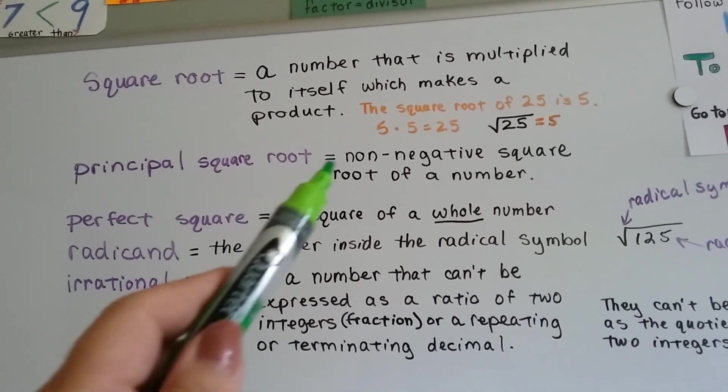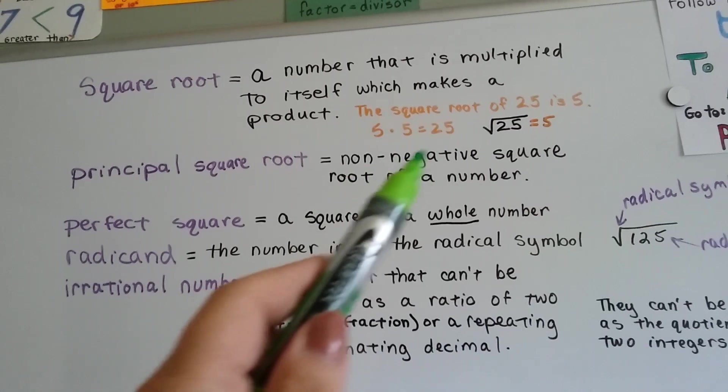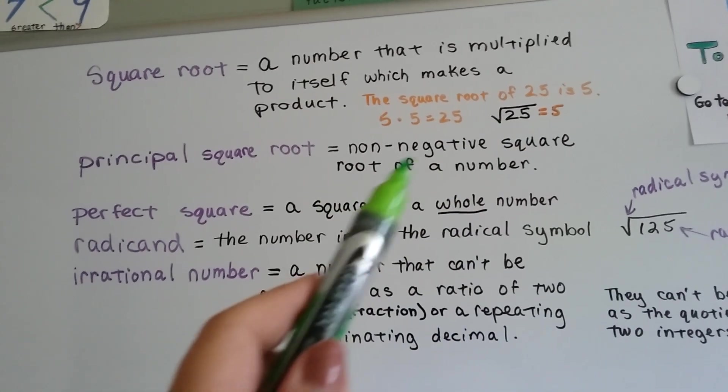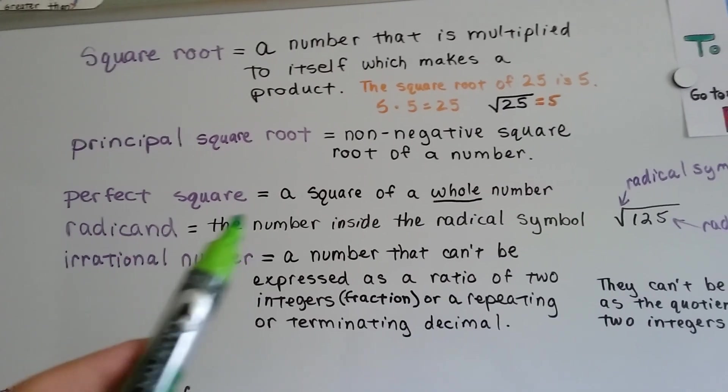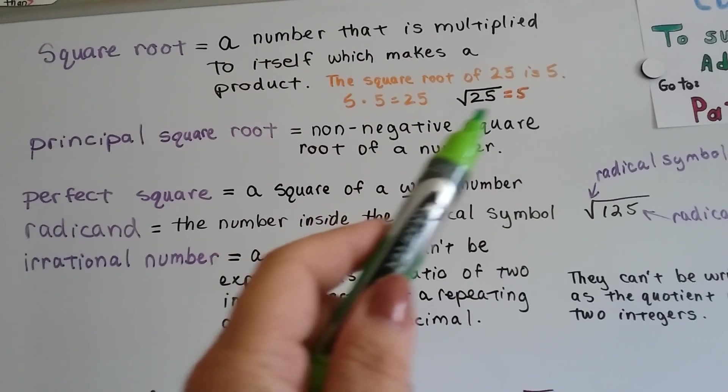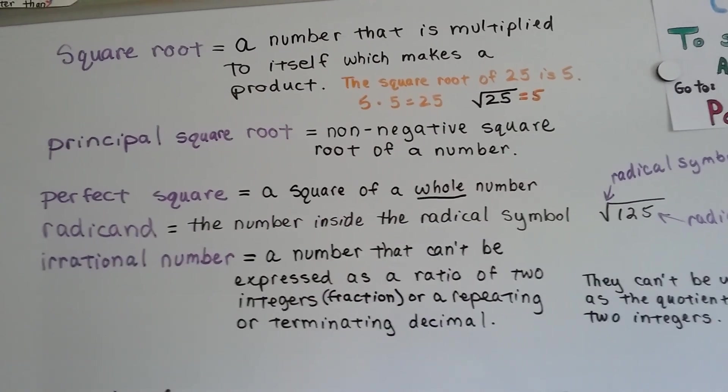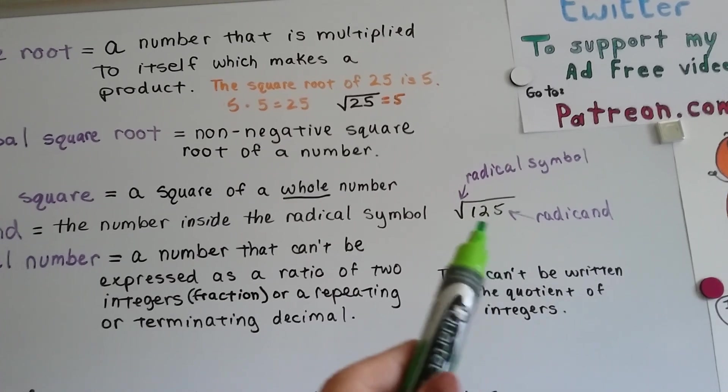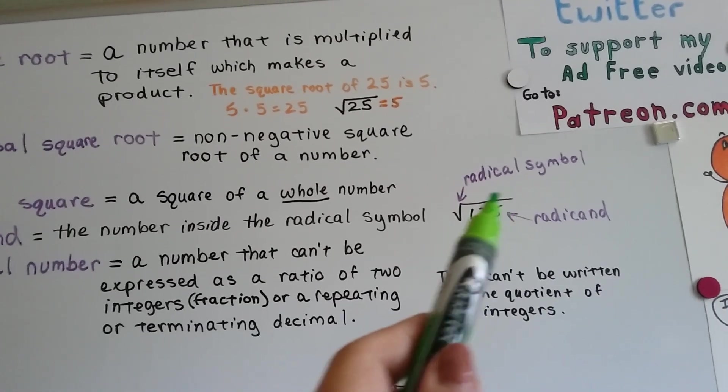A principal square root is a non-negative square root, that's a way of saying a positive one. Because 25 is positive and so is 5, it's a principal square root. A perfect square is a square of a whole number. 25 is a whole number, so it makes a perfect square. A radicand is the number that's inside this radical symbol.